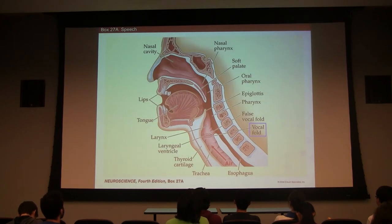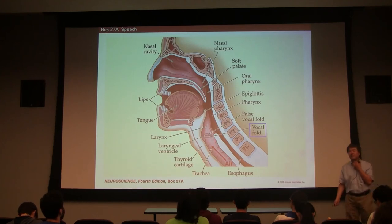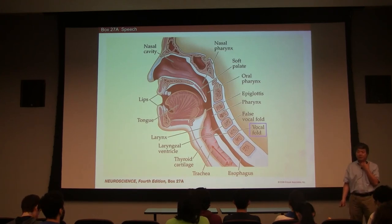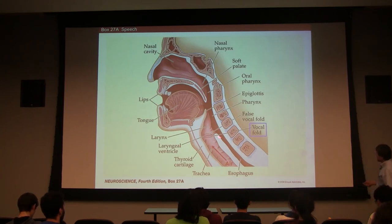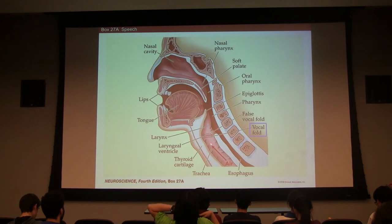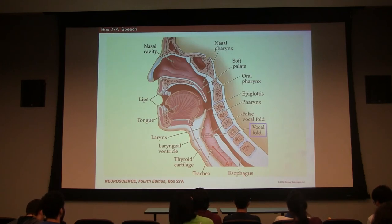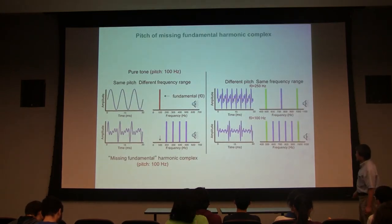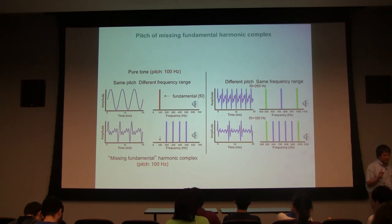How is pitch produced? We have a vocal fold — the bump in your throat (the Adam's apple). For both males and females, if you put a finger there while speaking, you can feel it vibrate. When air is pushed through the small gap in the vocal fold, it vibrates, and that vibration frequency is pitch. For males it's lower, for females it's higher.